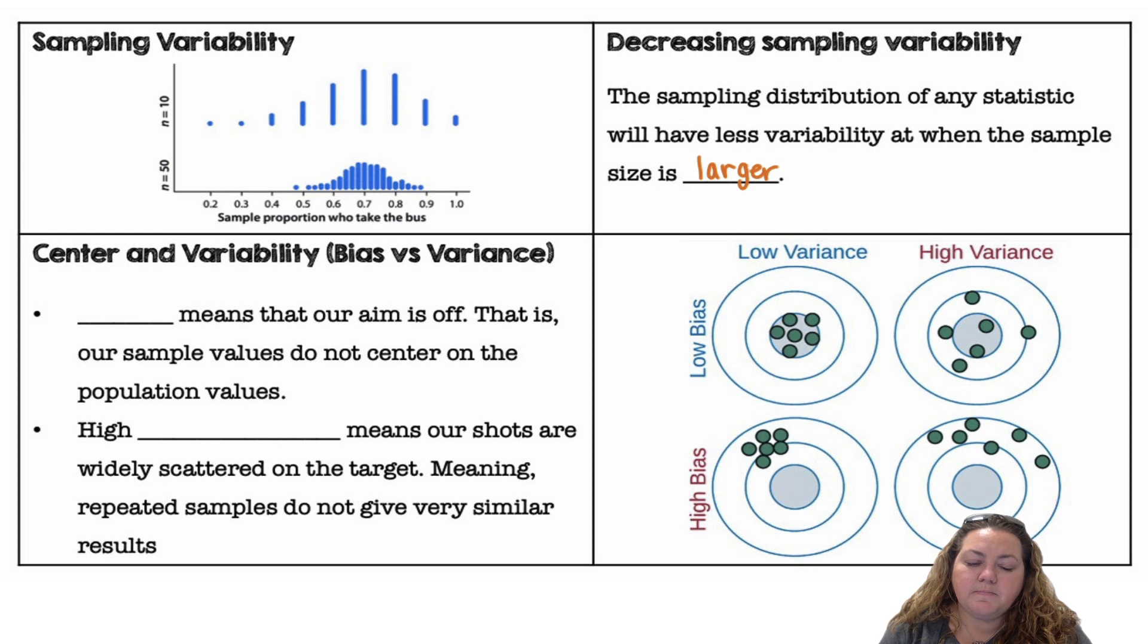Sampling variability. So I have a sampling distribution when n equals 10 and then a sampling distribution when n equals 50. And you can see when you increase the sample size, you decrease the variability, how spread out they are. Decreasing sampling variability. The sampling distribution of any statistic will have less variability when the sample size is larger.